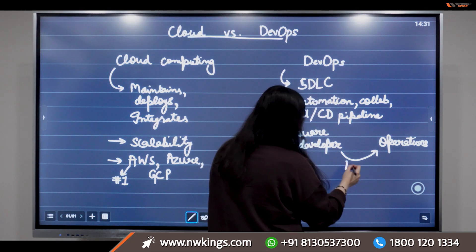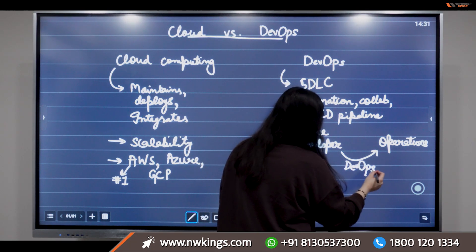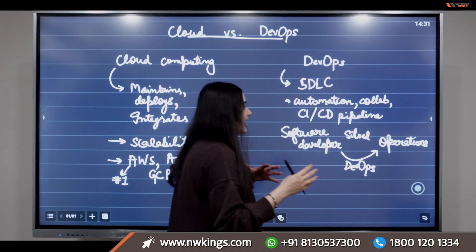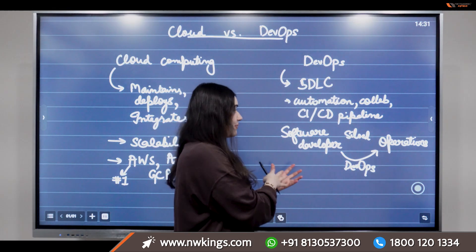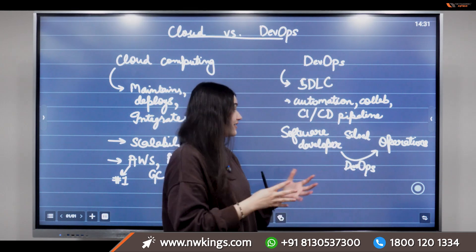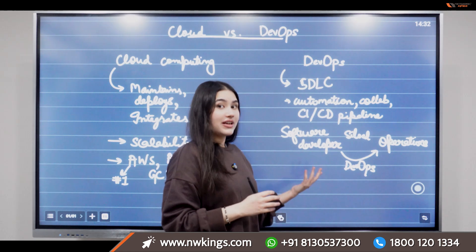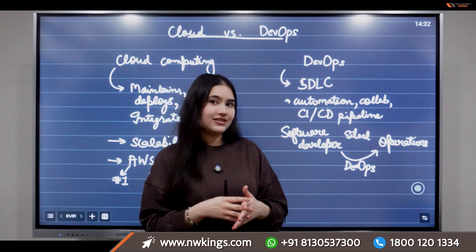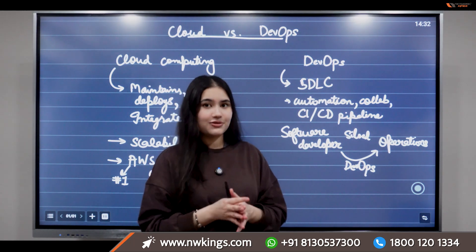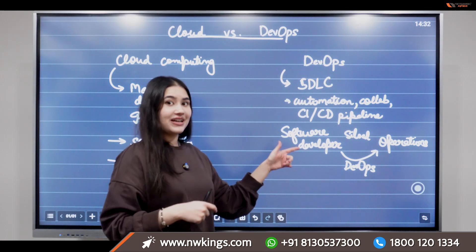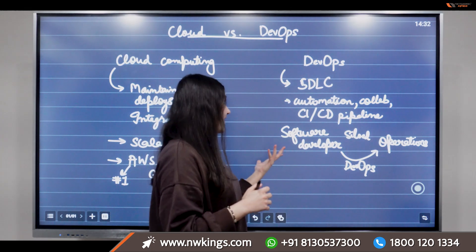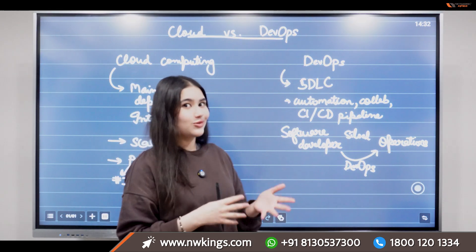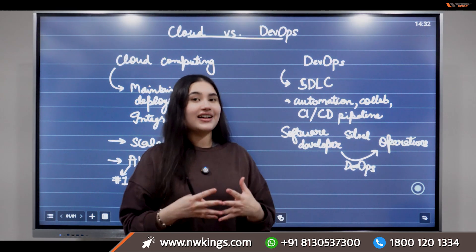A DevOps engineer eliminates all the siloed pathways and bridges the gap between software developers and operations engineers. This reduces the software development life cycle significantly — for example, if it takes two weeks to create a software product, a DevOps engineer can automate the whole lifecycle and get it done in just two to four hours.